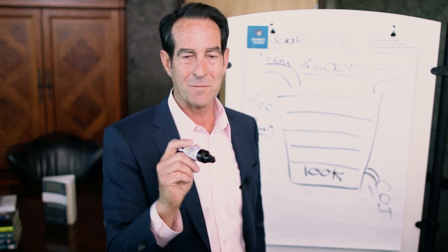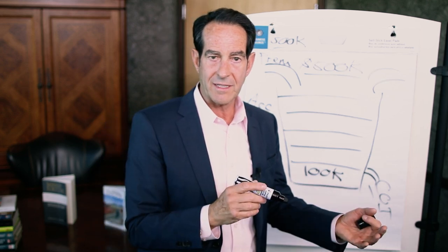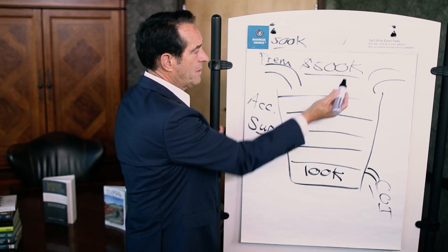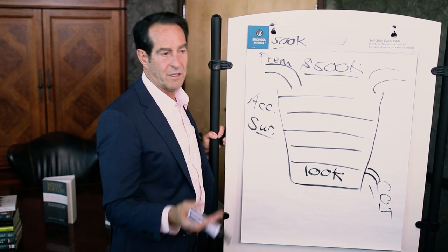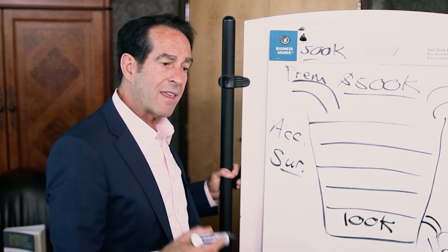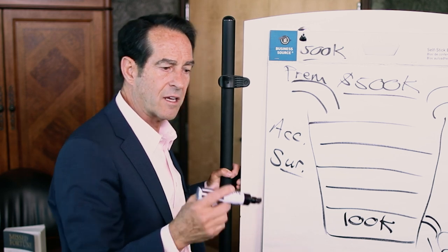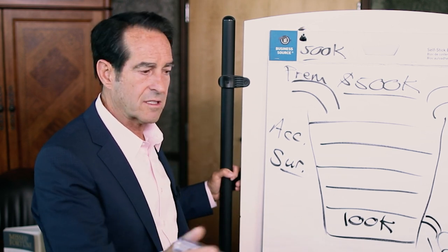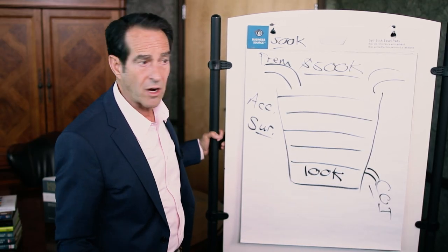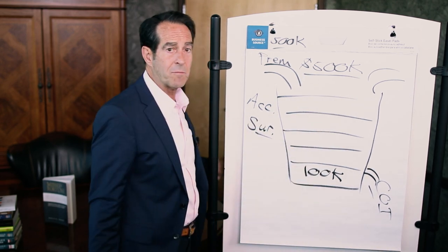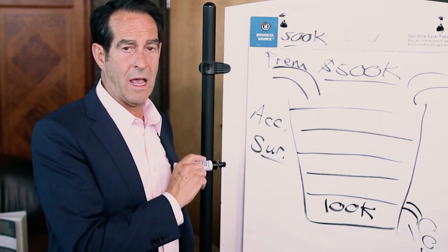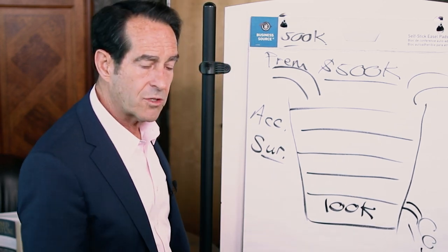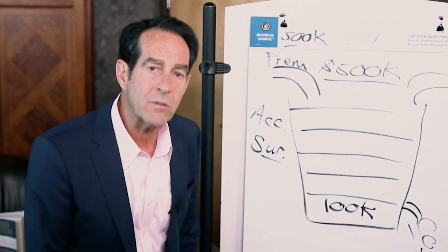The surrender value only comes into play if you cancel or surrender the policy. That would be dumb in many situations because if your half a million doubles to a million and then to 2 million — by then the surrender fee is waived or gone, because a surrender charge only applies if you cancel the policy in the first 10 to 15 years. In fact, you can have a rider that waives the surrender charge and gives you access to 100% of your money. But if you surrender the policy and get back more than the basis — if your basis is 500,000 — every dollar more than that is taxable.